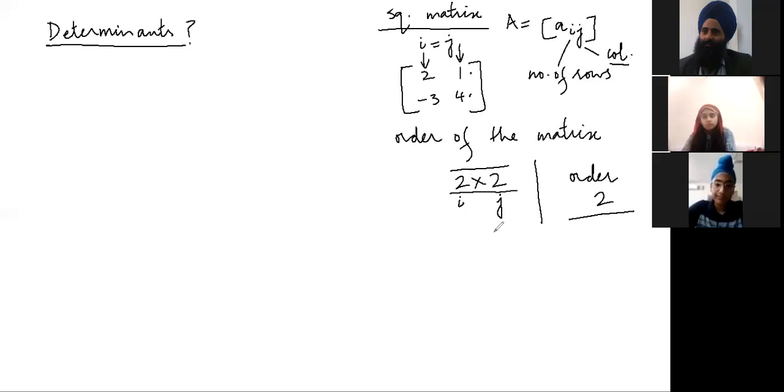But for a square matrix, we always know i is equal to j. So normally we say only one digit. Let us say we have 3 into 3 matrix. So I say the order is 3, if it is 17 into 17 matrix, I say the order is 17, very good.